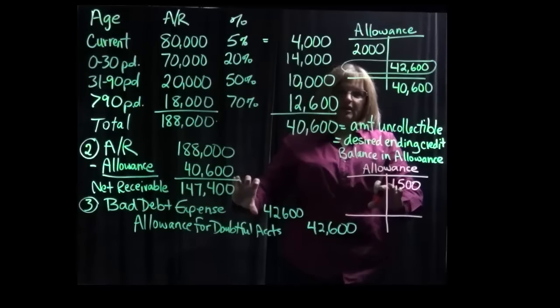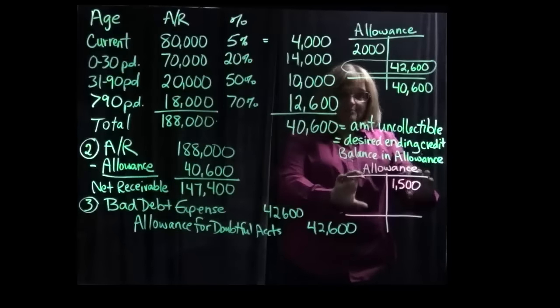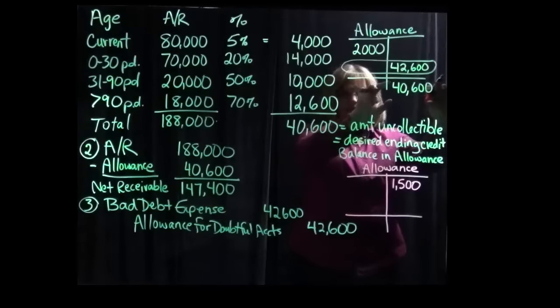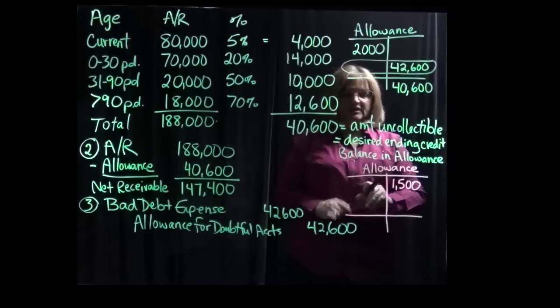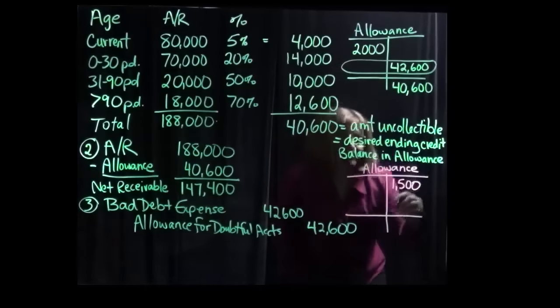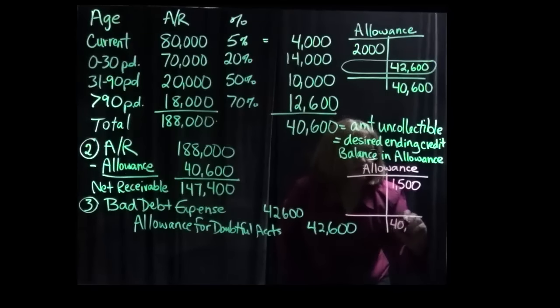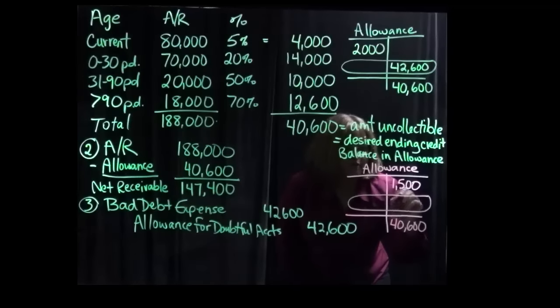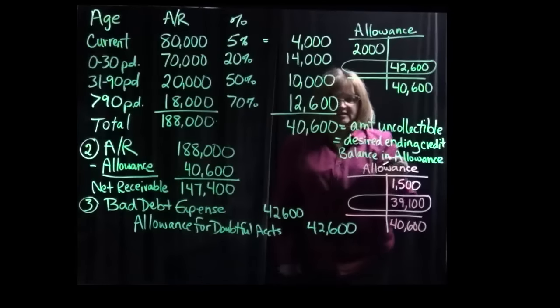Because this is a balance sheet focused approach, it matters what balance was already in the allowance balance because we're trying to get the allowance to a desired ending balance. So if it currently is $1,500 and we want it to be $40,600, in part four our expense entry is actually going to be a little bit smaller. So it's going to be $39,100 because that's the amount that we need to get from $1,500 to $40,600.